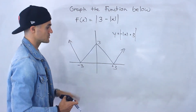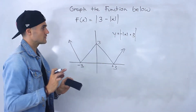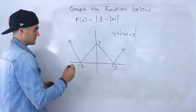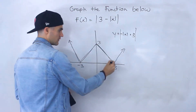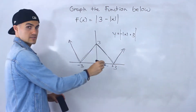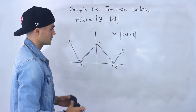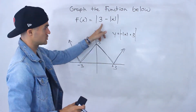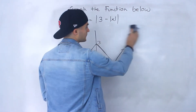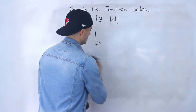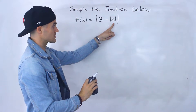So we took negative absolute value of x plus 3, graphed it first, reflected all the negative y values, and ended up with this. If you plug it into Desmos, you get the same graph. Now, making a piecewise function is going to be difficult because notice we have four different functions — four different lines. So we'll have four pieces. How do we get four pieces from this? We have to do it in steps and increments, starting with the absolute value of x.